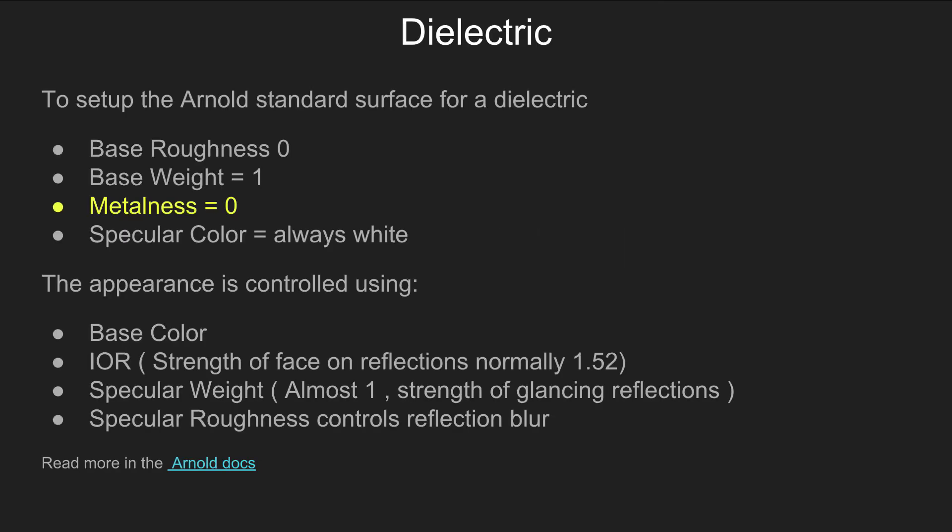So this is how to set up a dielectric: set the base roughness to zero in general, the base weight to one, metalness to zero, and the specular colour should always be white — pure white, 1, 1, 1. Then you control the appearance of the surface by controlling the base colour, the IOR, and the specular weight, which should be almost one. Sometimes a bit of dimming for the edge reflections can help, like maybe a value of 0.96 rather than one, but use your eye as a look reference. And then we have specular roughness, which controls reflection blur.